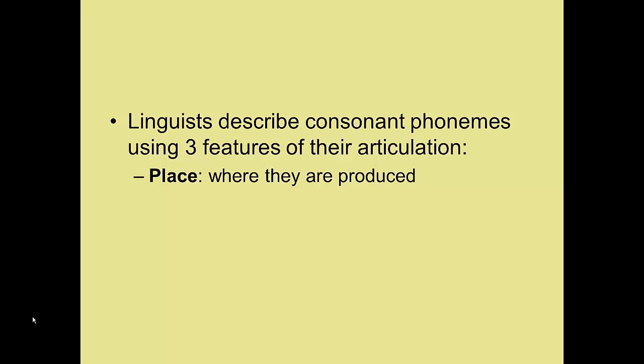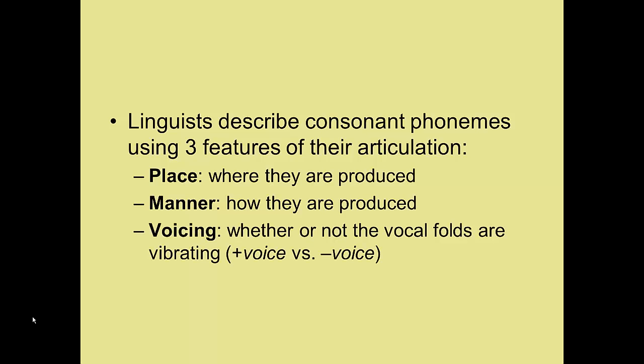Place — where in the vocal tract a phoneme is produced. Manner — the way in which it's produced. And voicing — whether or not the vocal folds are vibrating. All vowels are voiced, but consonants can be voiced or voiceless.